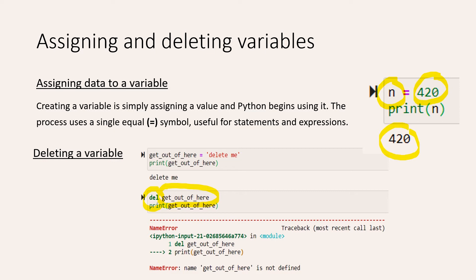So in this case, I write DEL and then 'get_out_of_here' is my variable that will be deleted. And if we delete it, we can also see here below that this variable does not exist anymore.